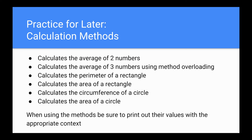Some practice for later: write some calculation methods — a method that calculates the average of two numbers, a method that calculates the average of three numbers using method overloading, one that calculates the perimeter of a rectangle, one that calculates the area of a rectangle, one that calculates the circumference of a circle, and one that calculates the area of a circle. When using these methods, be sure to print out their values with appropriate context so you can verify they're correct and understand how to use them within the right flow of a program. And that's it — I hope that was helpful.